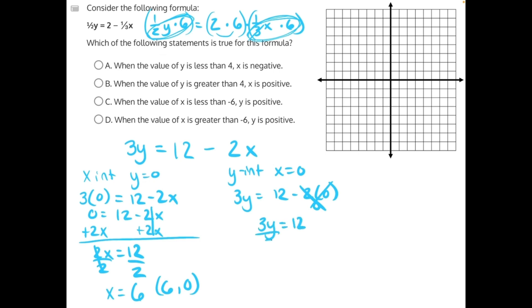3 is being multiplied to y, so the opposite operation is dividing by 3. These 3s will cancel, leaving us with y equals 12 divided by 3 is 4, or the coordinate point 0 comma 4.